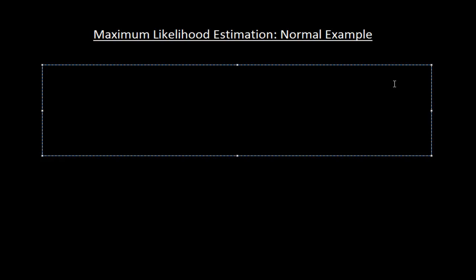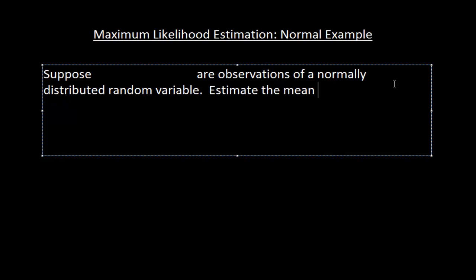Okay, so first here, we're just going to do an example of estimating the mean of a normal distribution based on sample data. So suppose that x1, x2, up to xn are observations of a normally distributed random variable. Estimate the mean using the method of maximum likelihood.